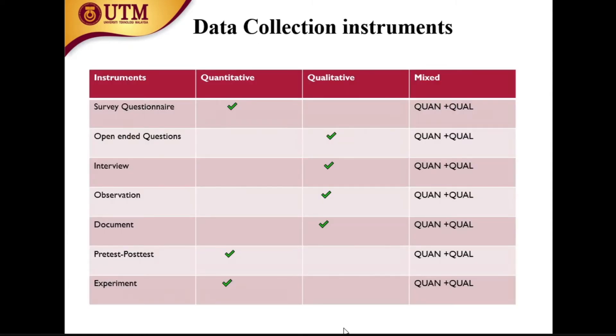Mixed method is the mix-up of qualitative and quantitative approaches — both qualitative and quantitative data will be gathered. Data collection instruments include survey questionnaire (quantitative), open-ended questions and interview (qualitative), observation (qualitative), documentation (qualitative), and pre-test, post-test, and experiment (quantitative). Sometimes documentation can also be quantitative if you collect documents in number form.